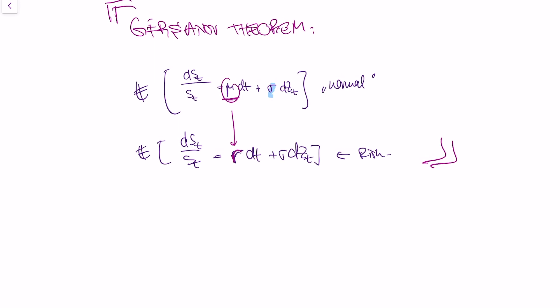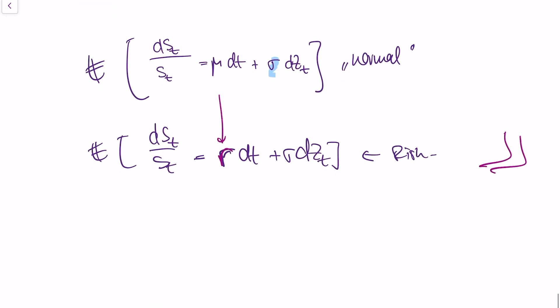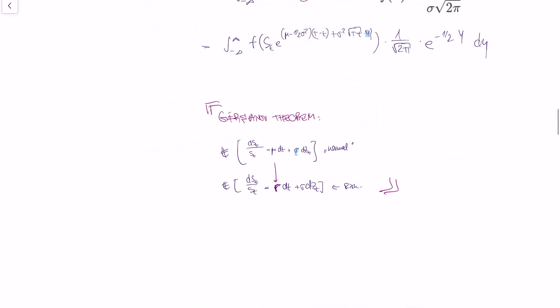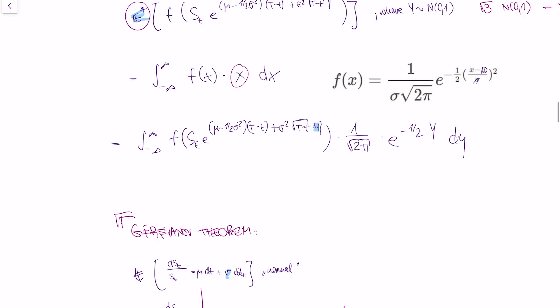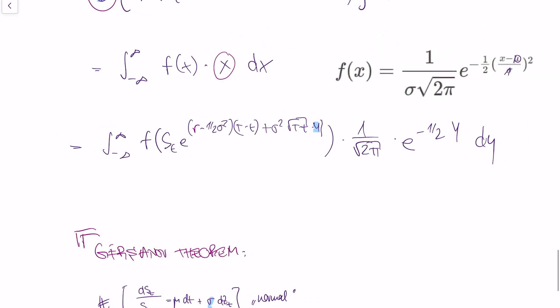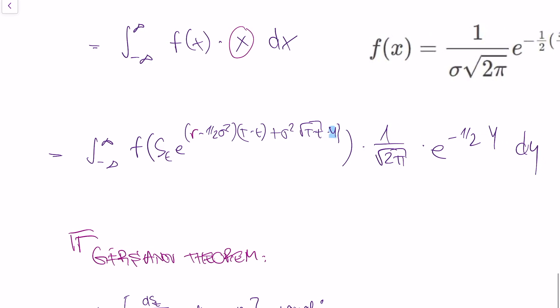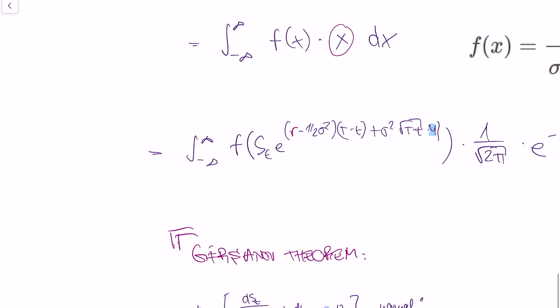To summarize: if you take the normal expectation, you use the asset process with the risky rate mu. If you take the risk-neutral expectation, you use the asset process but replace mu with the risk-free rate r. So in our formula, since we're looking for the risk-neutral expectation, we swap the risky rate for the risk-free rate. And what we've just derived is the Black-Scholes pricing equation. If you give me any derivative payoff function, we just need to evaluate this integral to obtain the price.